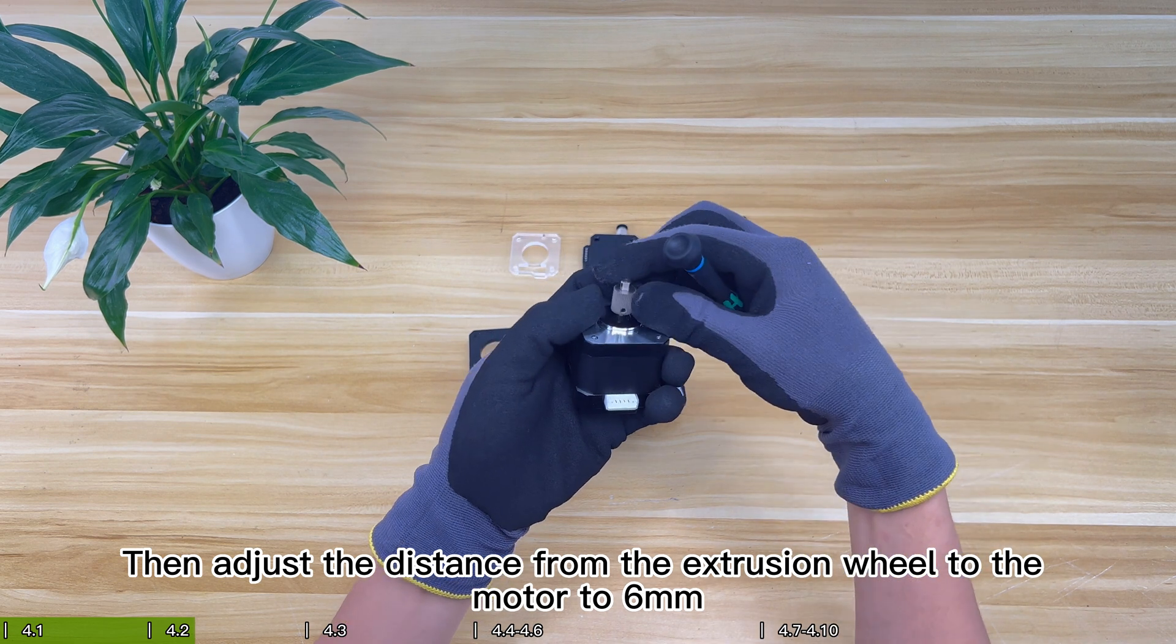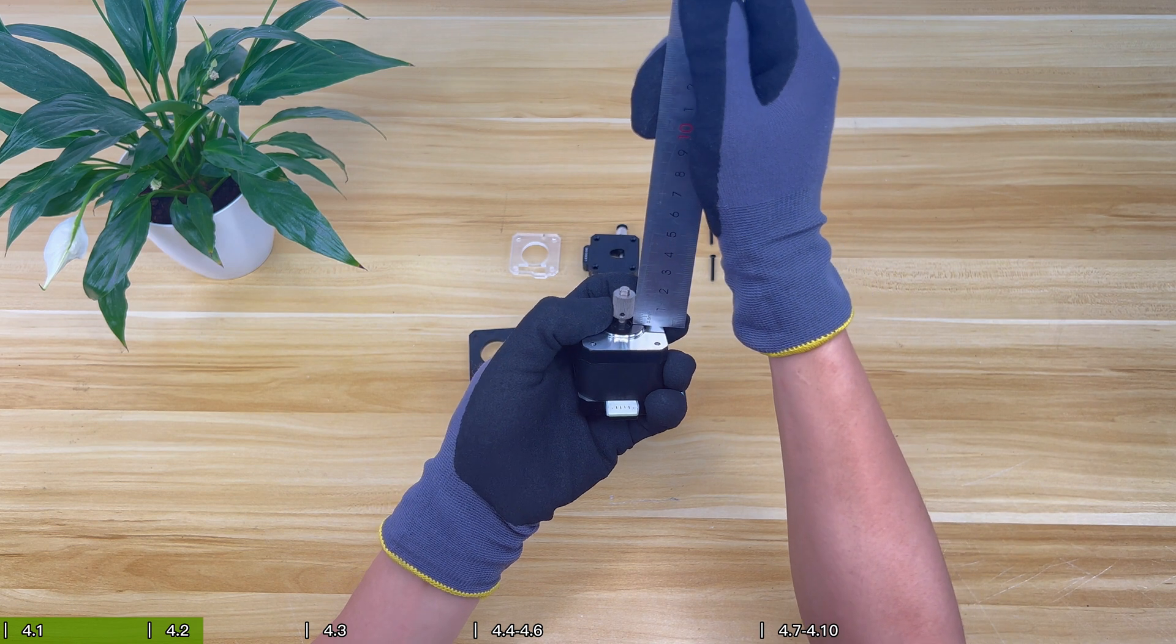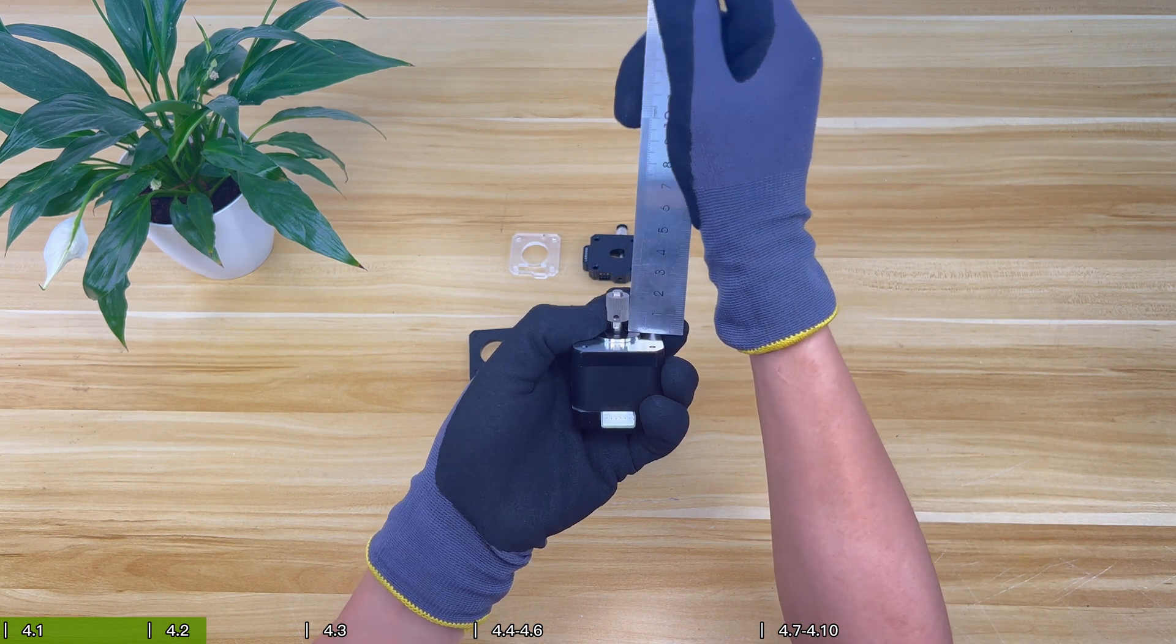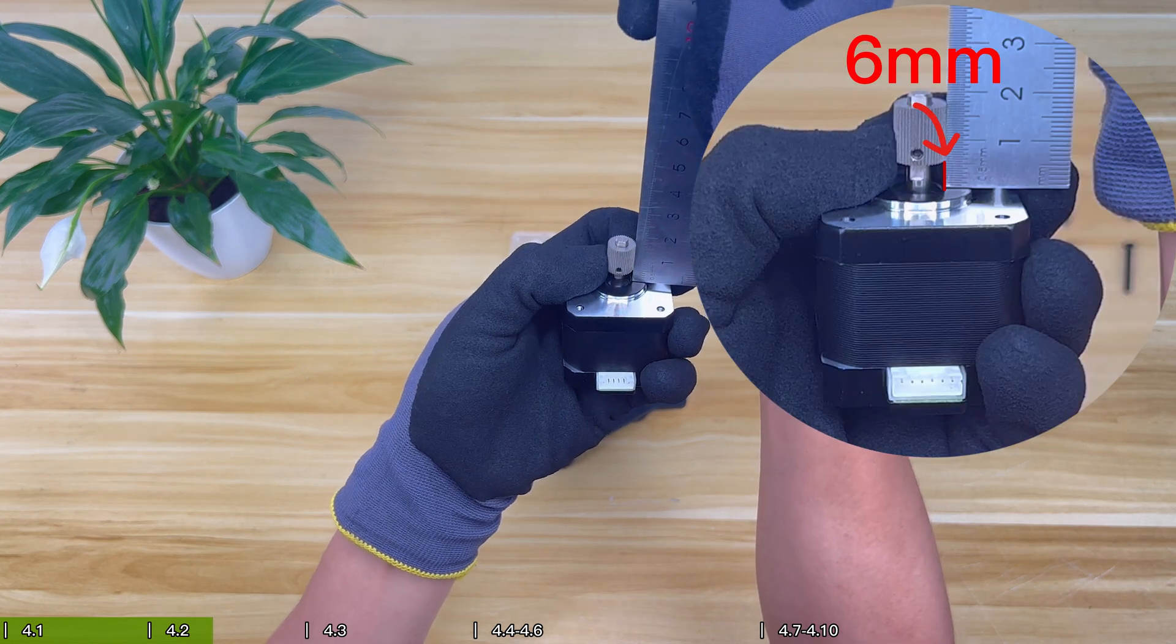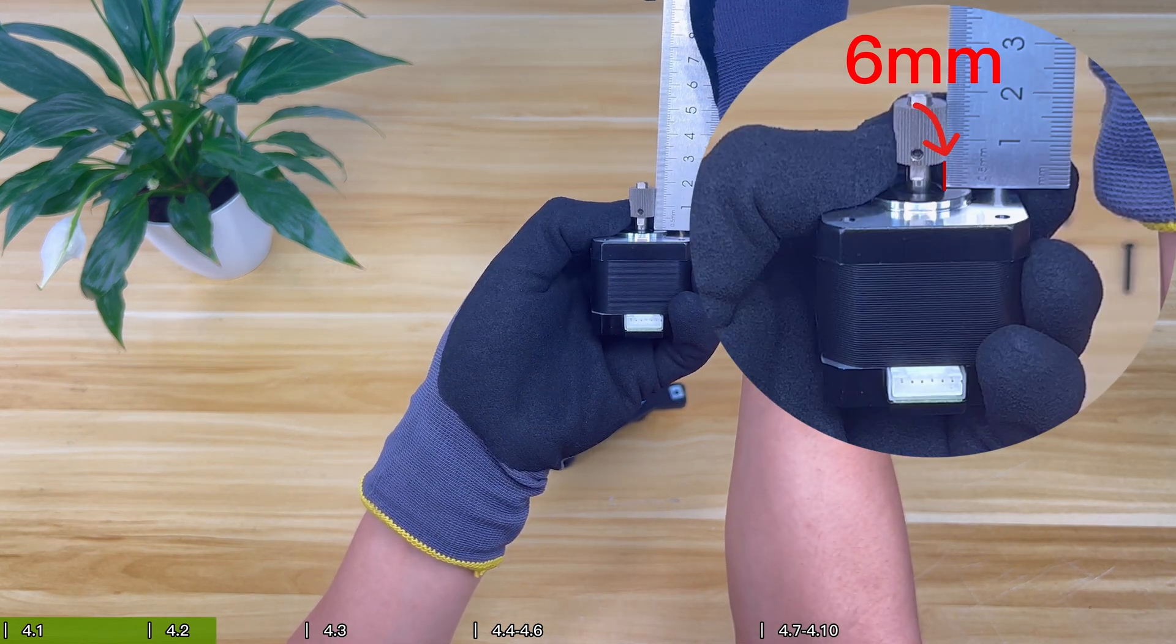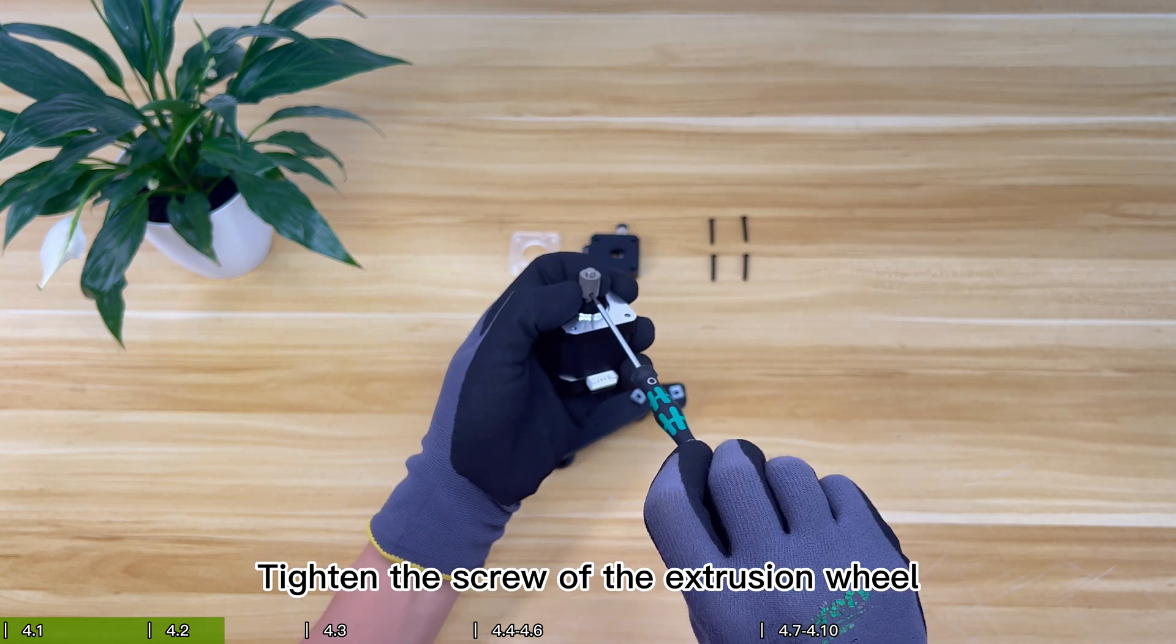Then adjust the distance from the extrusion wheel to the motor to 6 mm. Tighten the screw of the extrusion wheel.